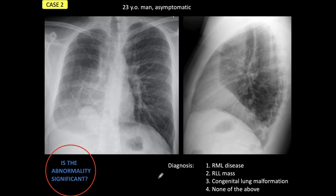We are back. Now let's analyze the findings. Apparently this patient is very sick because the right lung looks awful. But remember, the patient is asymptomatic. So let's try to find a reasonable explanation for the findings. The first thing that calls our attention is this possible mass — we don't know what it is, but it is very worrisome.